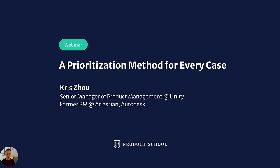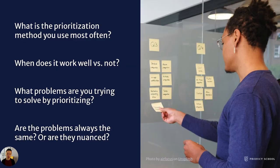Before we get started, I would love you to take a moment and think about what is a prioritization method that you use most often. What are the occasions that this method works really well, and what are the occasions that it doesn't? What problems are you trying to solve during that prioritization? Is that always a conscious problem, or is it sometimes a vague problem? And are the problems always the same, or do they vary between different situations? I'm going to pause here for maybe one minute to give you the space to think, and then we will resume.